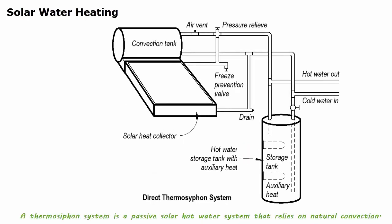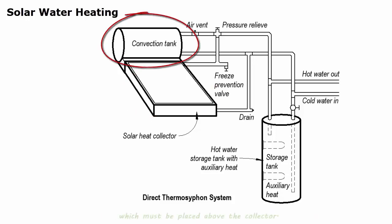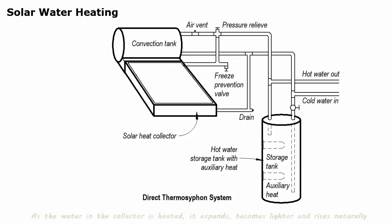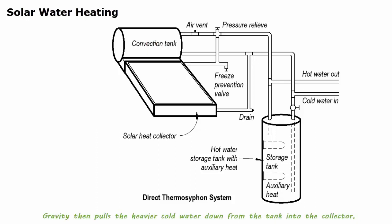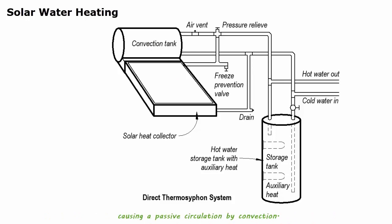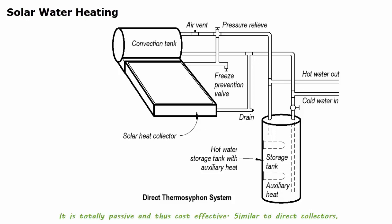A thermal siphon system is a passive solar hot water system that relies on natural convection. Cold water is circulated through the collector into the tank, which must be placed above the collector. As the water in the collector is heated, it expands, becomes lighter, and rises naturally into the tank above. Gravity then pulls the heavier cold water down from the tank into the collector, causing passive circulation by convection. A thermal siphon system requires neither a pump nor a controller—it is totally passive and thus cost effective. Similar to direct collectors, this system is not suitable for very cold climates.